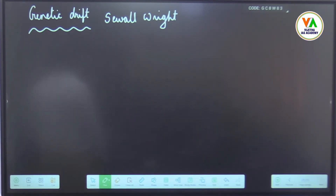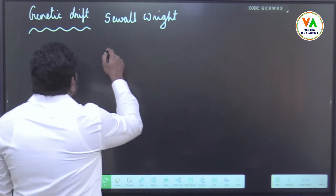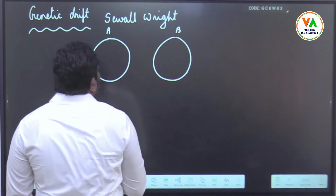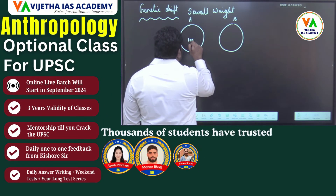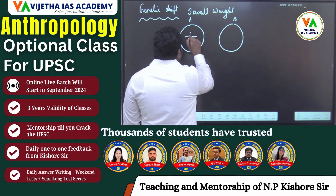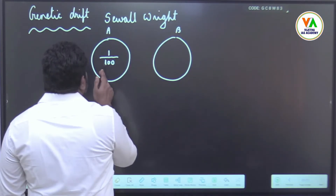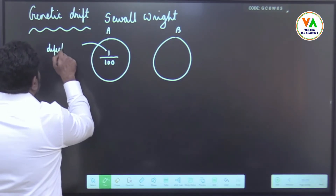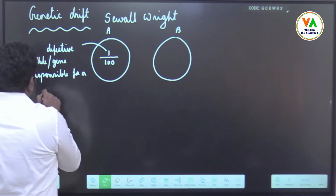Genetic drift means change or deviation from the normal gene pool. Take two population groups: population group A and population group B. Say, for example, they have a population of 100, out of which one person has a defective trait, gene, or allele responsible for a particular genetic disease.